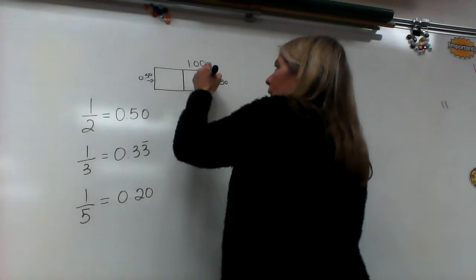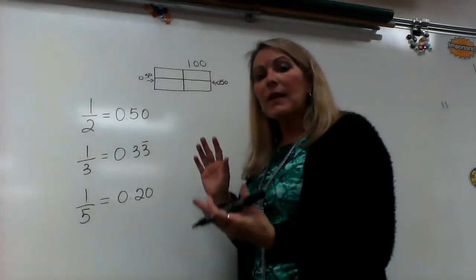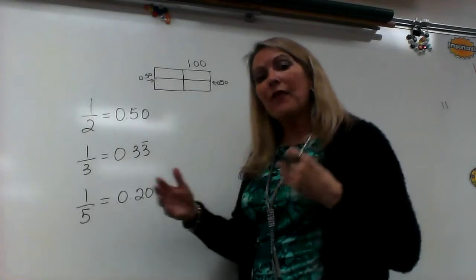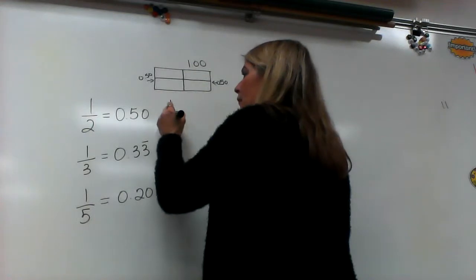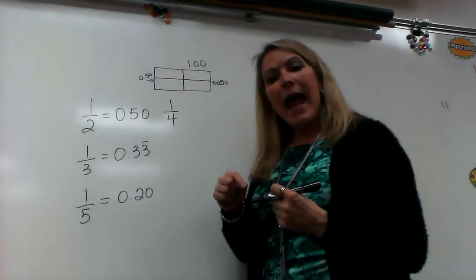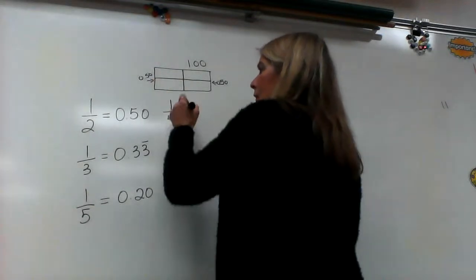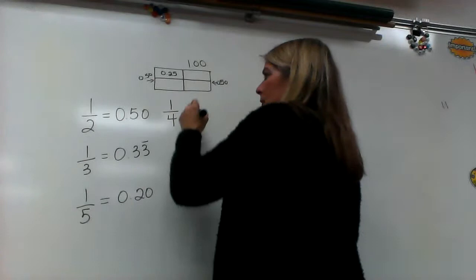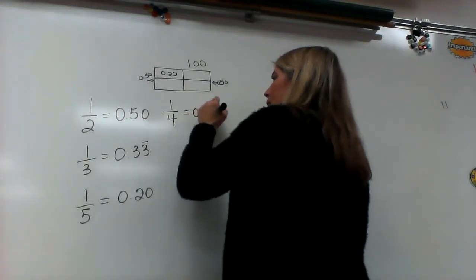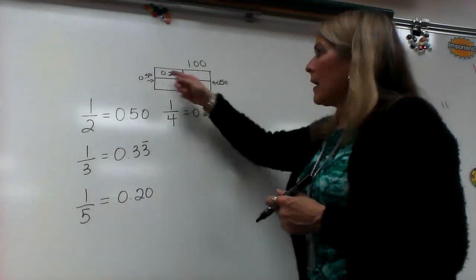But if I divide it into two again, once again, I've doubled the number of pieces, but I've halved their size. So, that means now I've got four pieces. So, that means the fourths are actually half of my halves. And so, what's half of 50? Well, half of 50 is 25 hundredths.